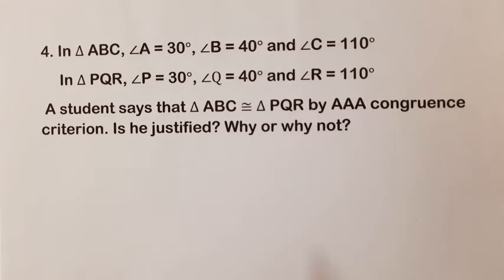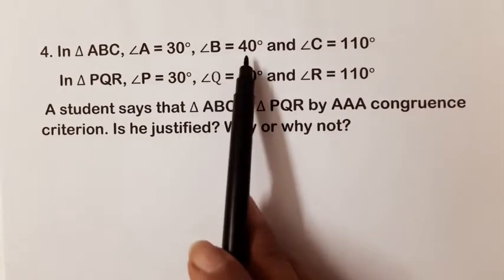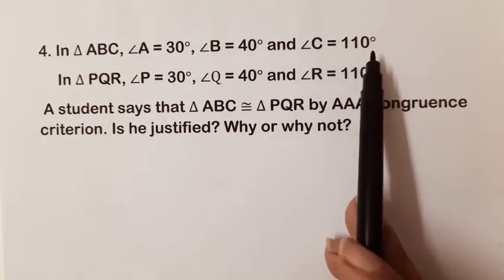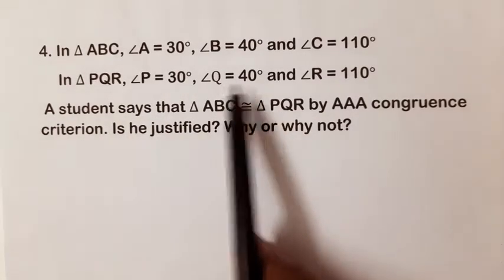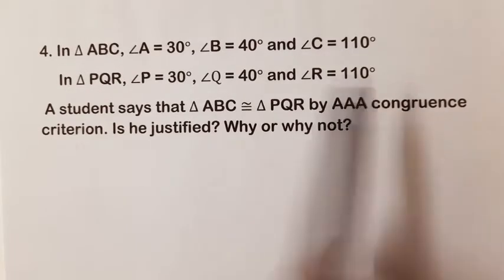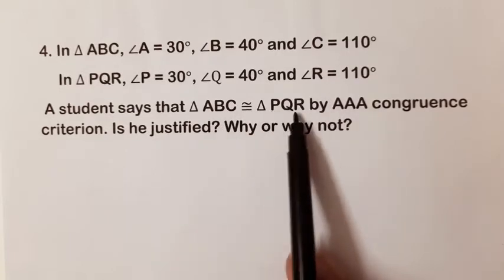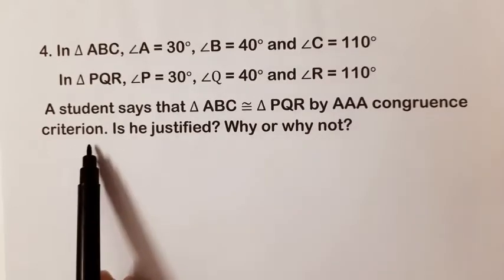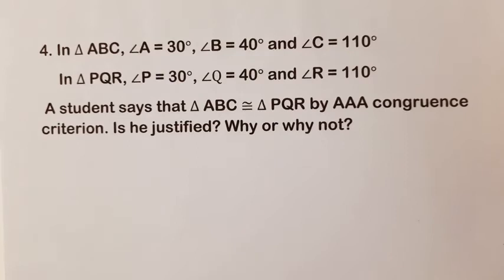The question says: in triangle ABC, angle A equal to 30 degrees, angle B equal to 40 degrees, and angle C equal to 110 degrees. In triangle PQR, angle P equal to 30 degrees, angle Q equal to 40 degrees, and angle R equal to 110 degrees. A student says that triangle ABC is congruent to triangle PQR by AAA congruence criterion. Is he justified? Why or why not?